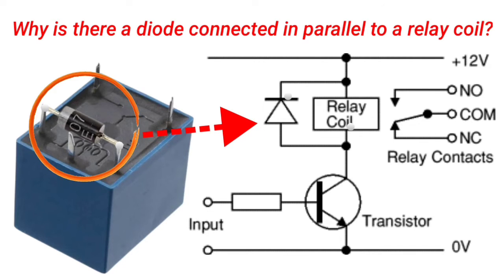This voltage is generated in the coil when the current flow is interrupted. The purpose of the diode is to allow the current flowing through the coil to continue circulating when the relay is deactivated.